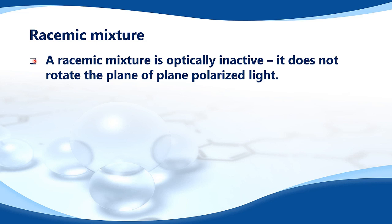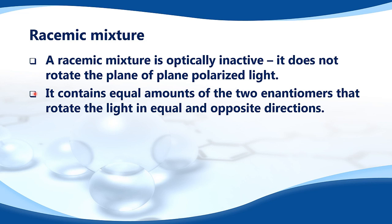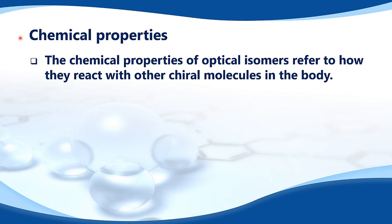A racemic mixture is optically inactive — it does not rotate the plane of plane polarized light. It contains equal amounts of the two enantiomers that rotate the light in equal and opposite directions.